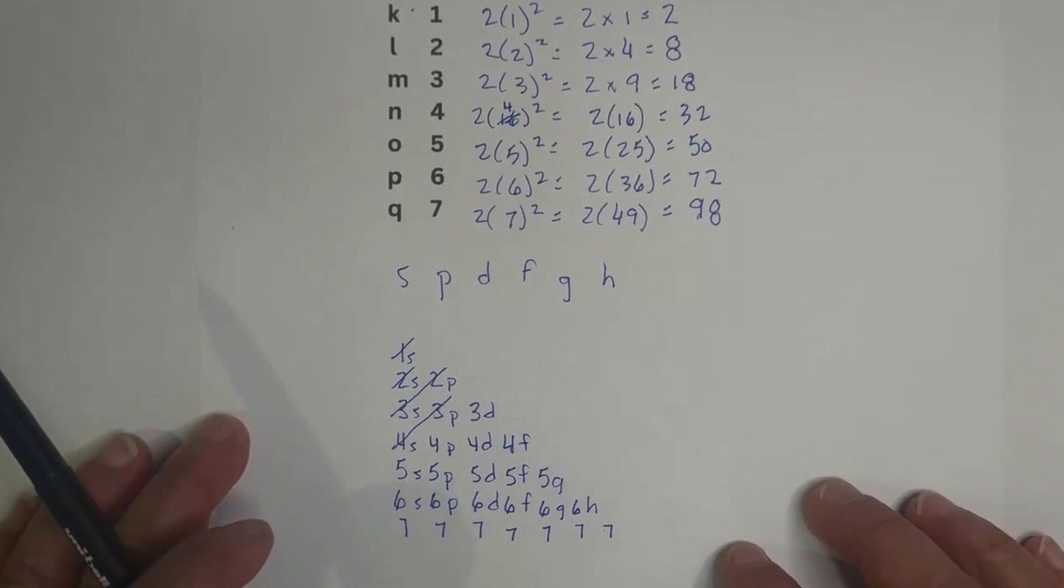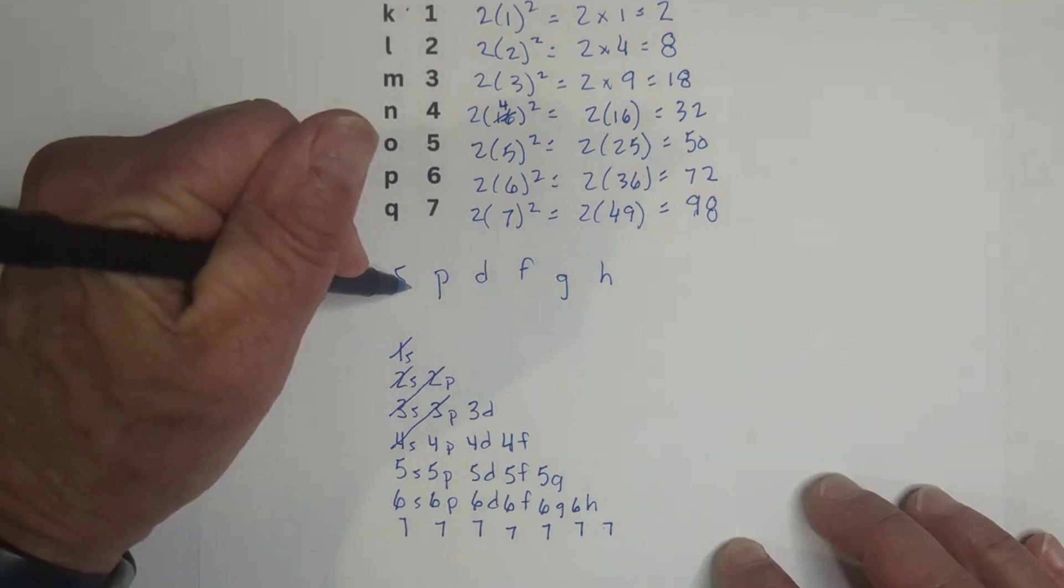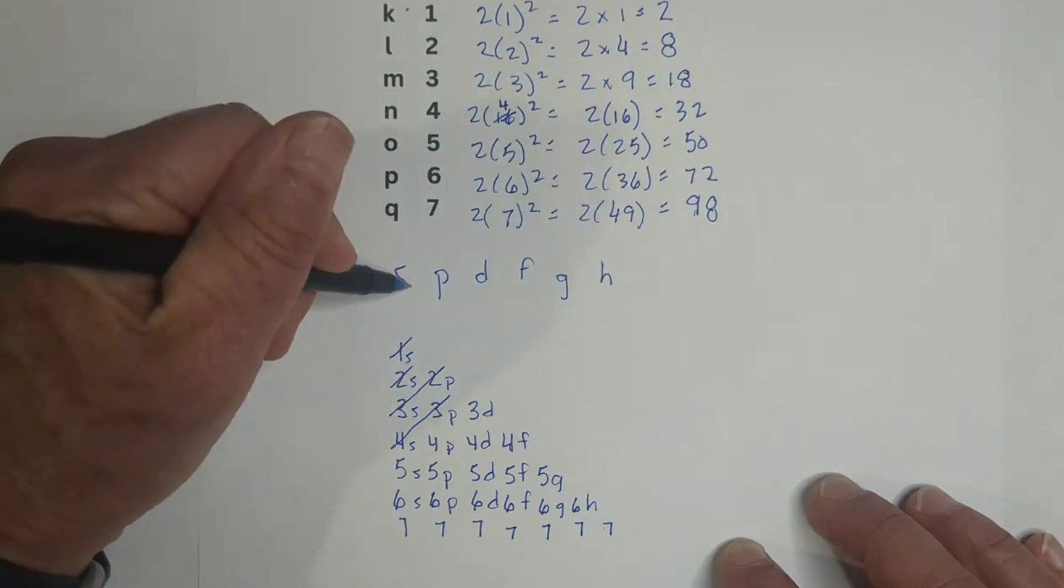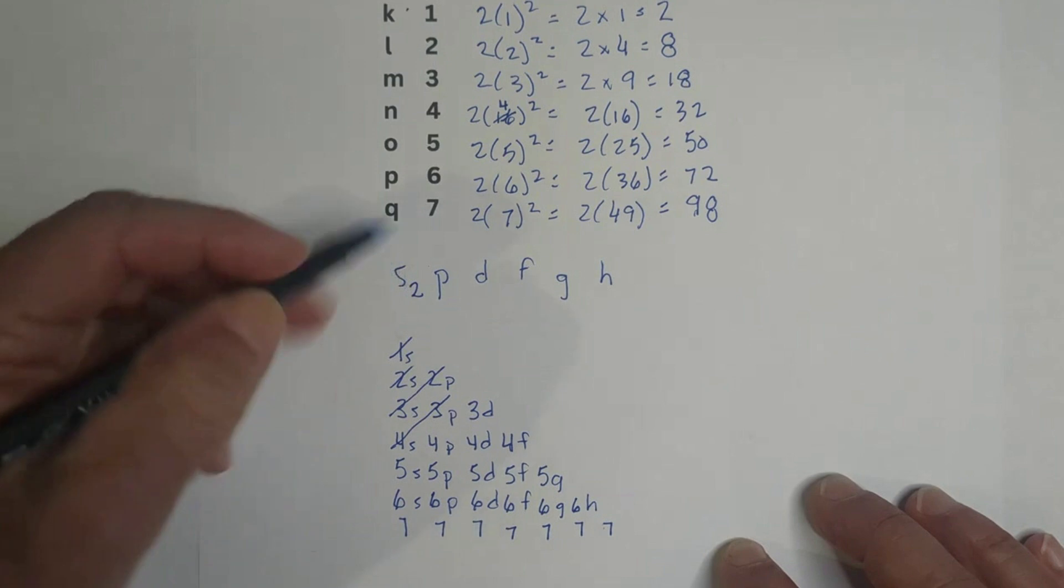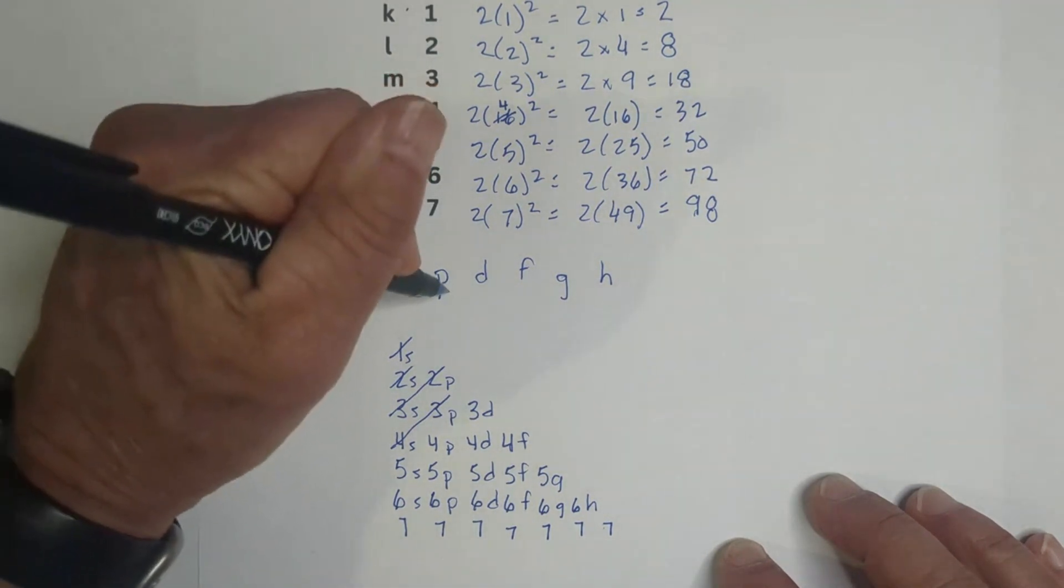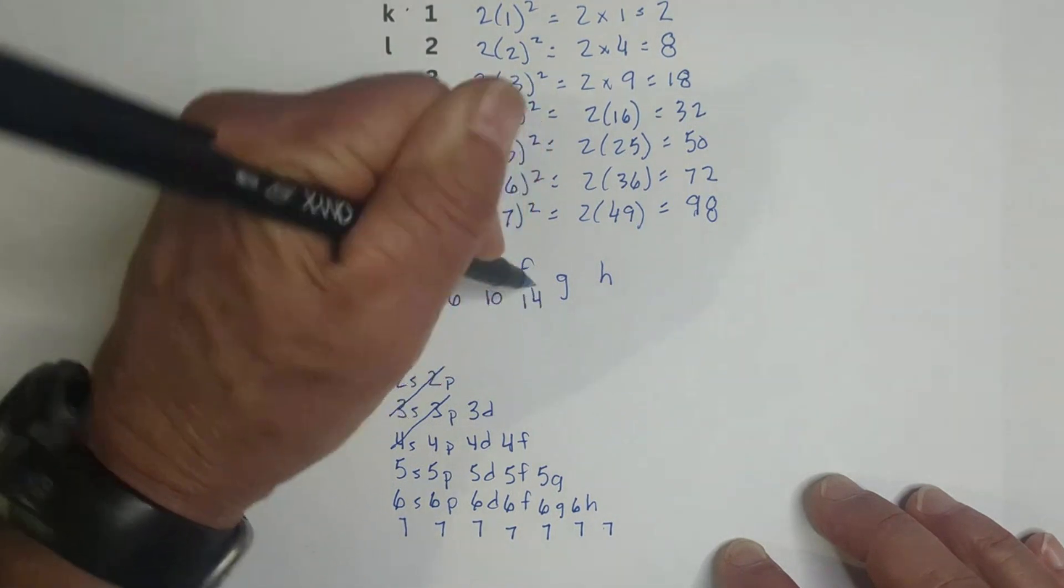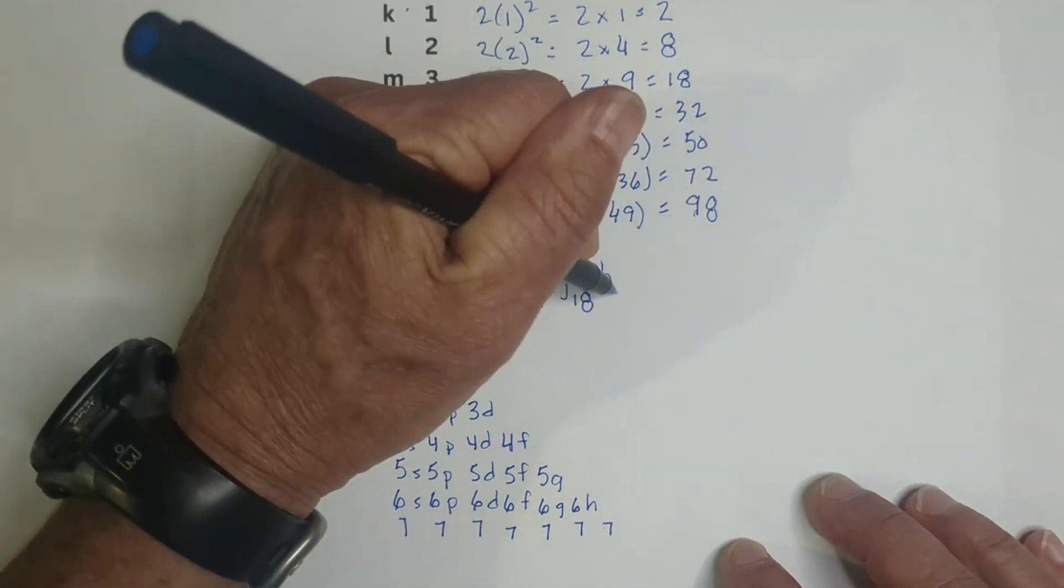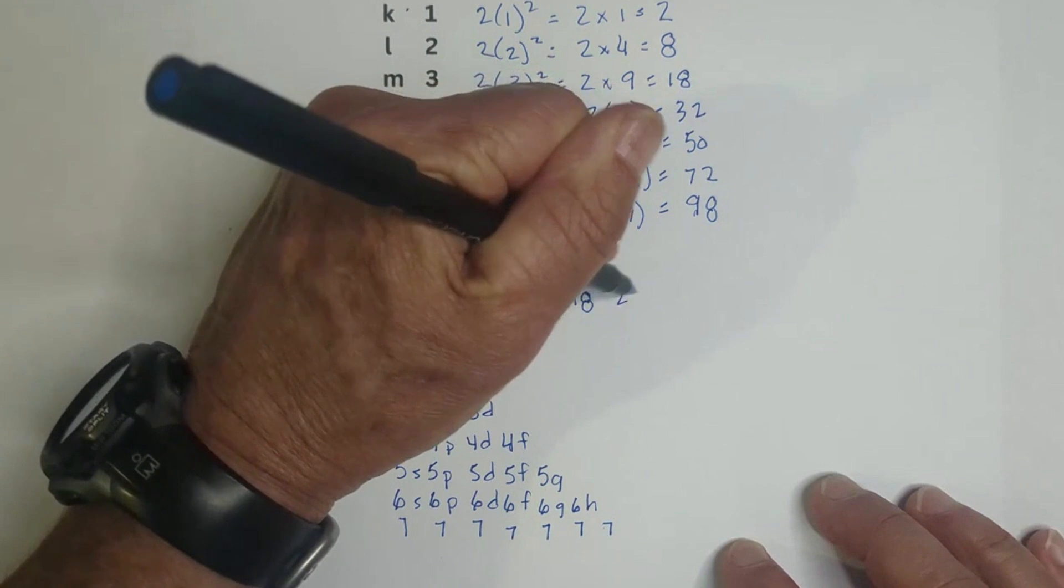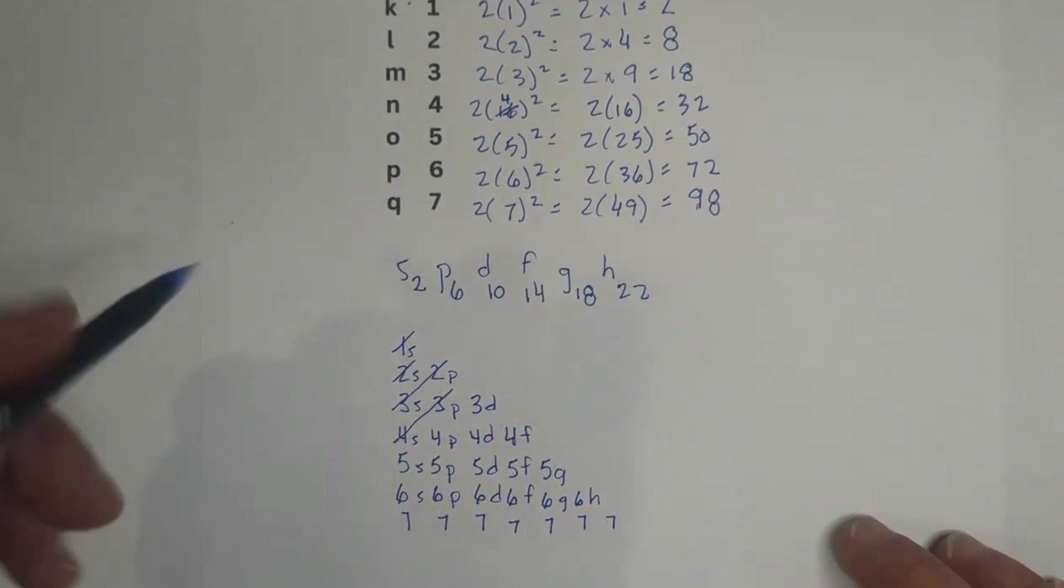Another way is you can use the orbitals. And the orbitals, the first orbital, the S orbital, and it goes up S, P, D, F, G, H, and it goes once the S orbital holds two electrons, and then the P, you go up by fours. So that's six. Let's go up by four again. That's 10. That's 14. That's 18. And then the last one is 22.